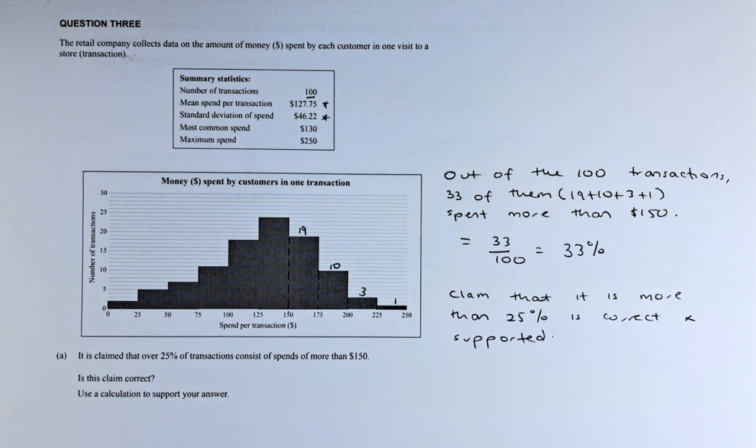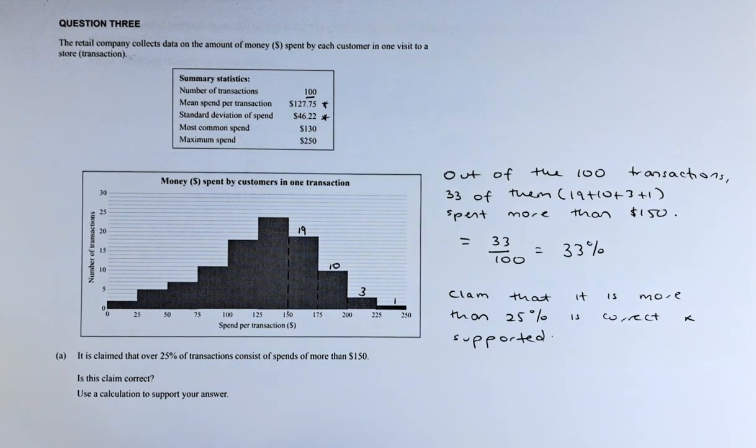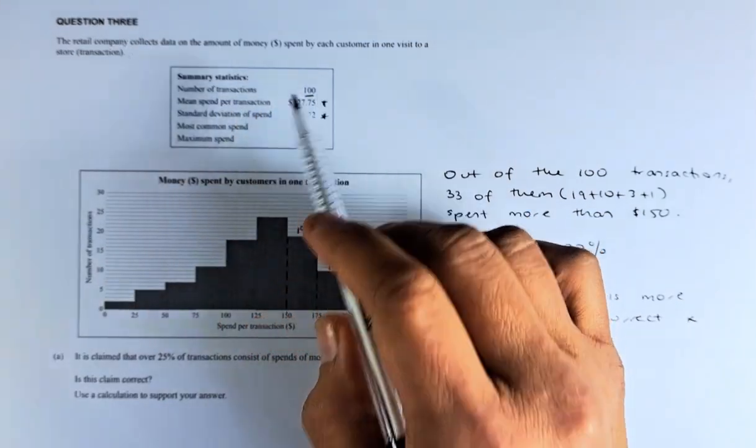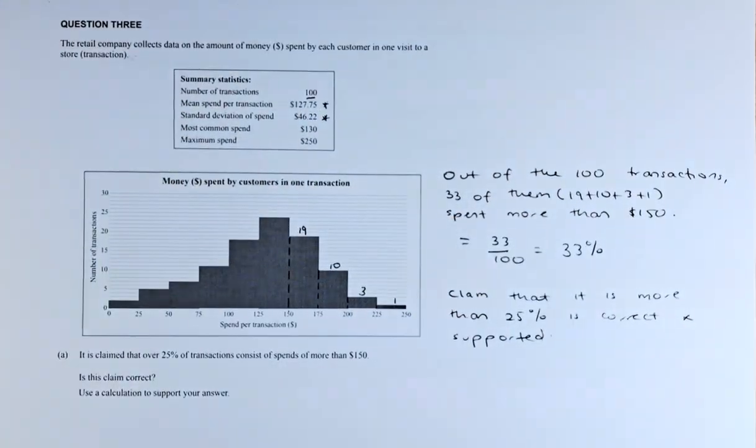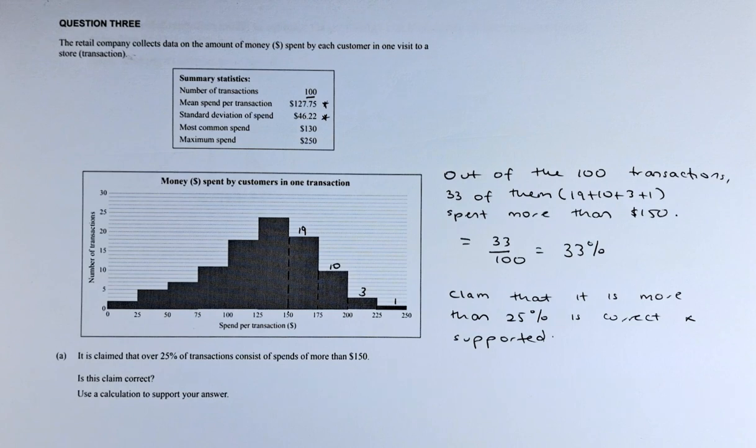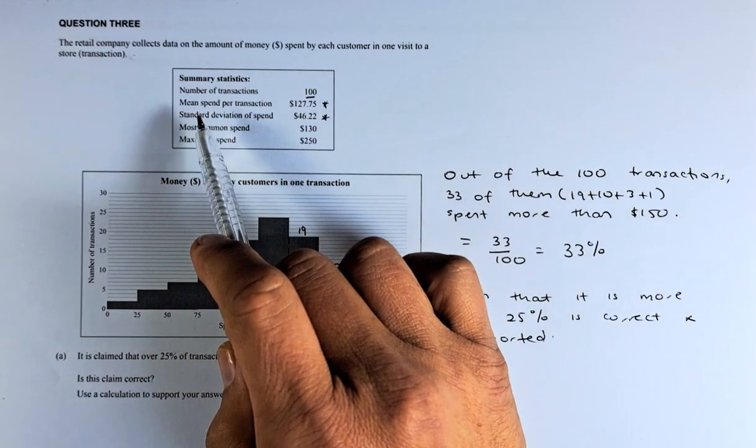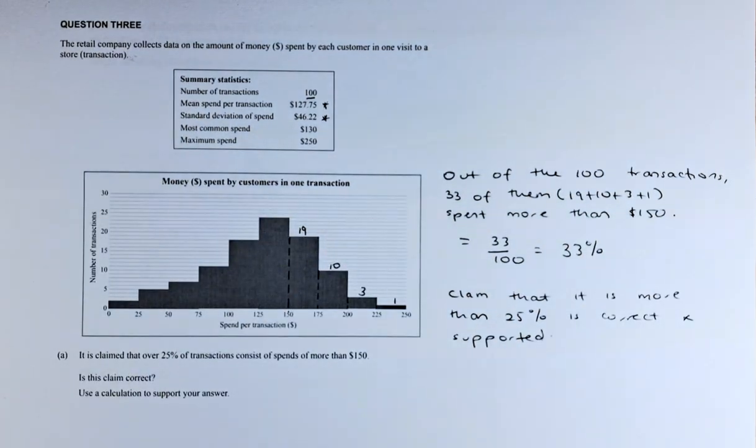The retail company collects data on the amount of money spent by each customer in one visit to a store. So this is a table. The number of transactions is 100. The mean is $127.75. Standard deviation is $46.22. Most common spend is $130. Maximum spend is $250. We will look at the mean and standard deviation in the next question.